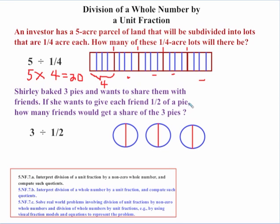Next problem: Shirley baked three pies and wants to share them with friends. If she wants to give each friend half of a pie, how many friends would get a share of the three pies? We have our three pies, each cut in half. Counting them up: one, two, three, four, five, six. So Shirley will be able to share the pies with six friends. Students take three and multiply by the reciprocal of one-half — which is three times two — to get the solution of six half-pies.